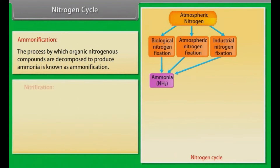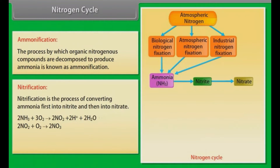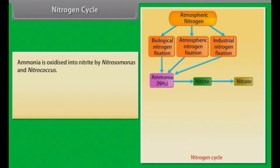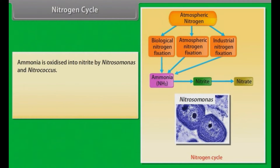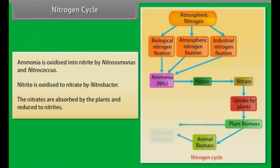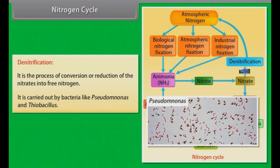Nitrification is the process of converting ammonia first into nitrite and then into nitrate: 2NH₃ + 3O₂ → 2NO₂⁻ + 2H⁺ + 2H₂O, then to 2NO₃⁻. This process is carried out by chemoautotrophic soil bacteria. Ammonia is oxidized into nitrite by Nitrosomonas and Nitrococcus; nitrite is oxidized to nitrate by Nitrobacter. The nitrates are then absorbed by plants and reduced to nitrites. Denitrification is the process of reducing nitrates into free nitrogen, carried out by bacteria such as Pseudomonas and Thiobacillus.